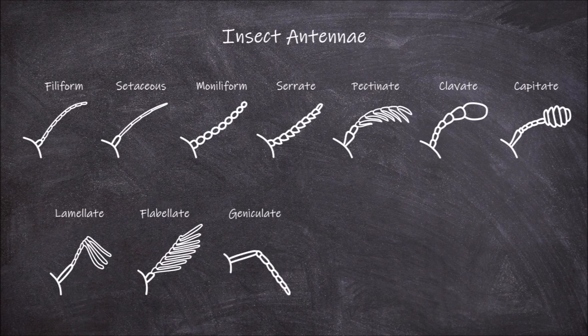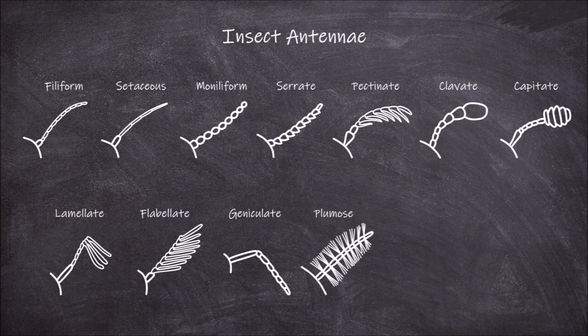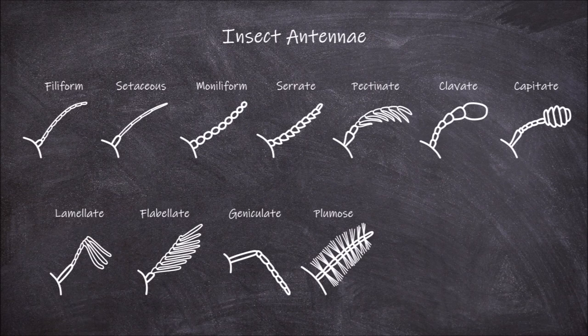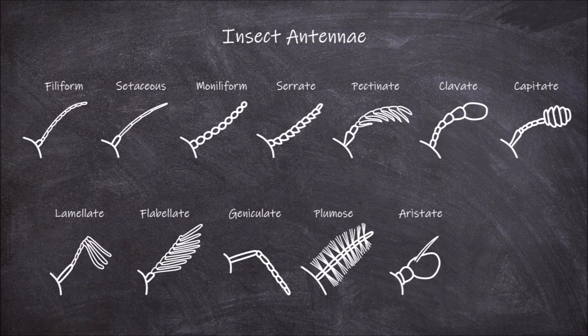Geniculate antennae are elbowed as there is a bend partway along the antennae. Plumose antennae have fine thread-like branches called setae coming off each of the segments, giving a feather-like appearance. Aristate antennae consist of a single enlarged segment of the flagellum that bears a bristle called the arista.